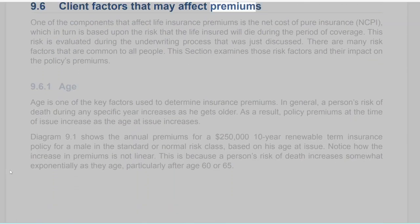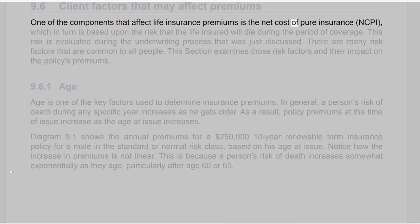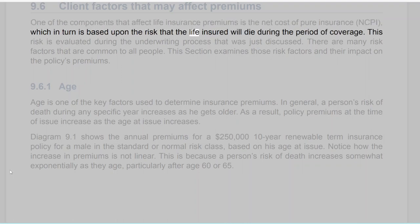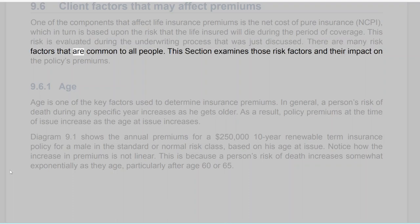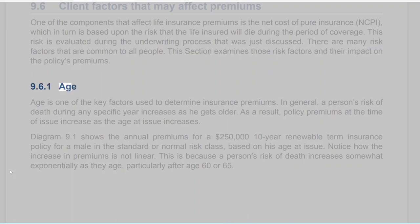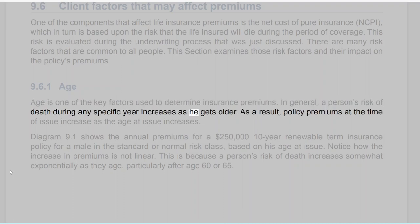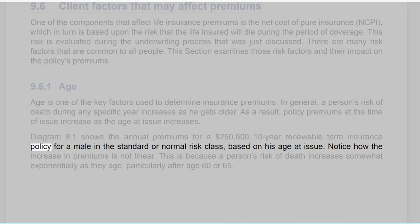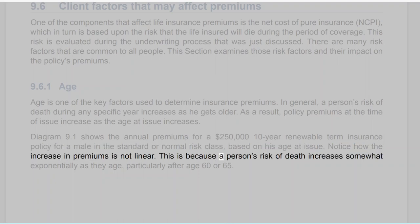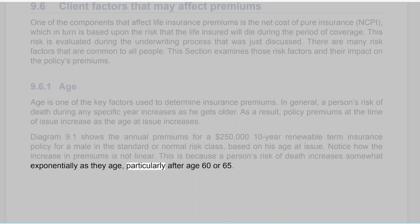Section 9.6: Client Factors That May Affect Premiums. One of the components that affects life insurance premiums is the net cost of pure insurance (NCPI), which in turn is based upon the risk that the life insured will die during the period of coverage. This risk is evaluated during the underwriting process. Section 9.6.1: Age. Age is one of the key factors used to determine insurance premiums. In general, a person's risk of death during any specific year increases as he gets older. As a result, policy premiums at the time of issue increase as the age at issue increases. A diagram shows annual premiums for a $250,000 10-year renewable term insurance policy for a male in the standard risk class based on his age at issue. Notice that the increase in premiums is not linear because a person's risk of death increases somewhat exponentially as they age, particularly after age 60 or 65.